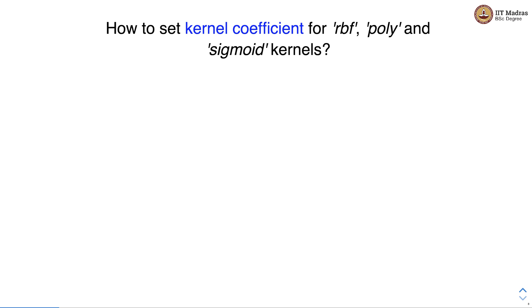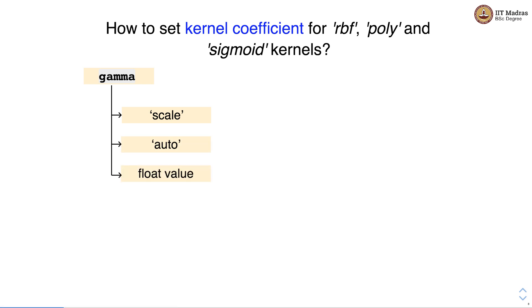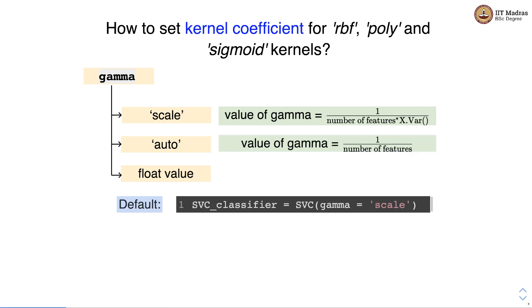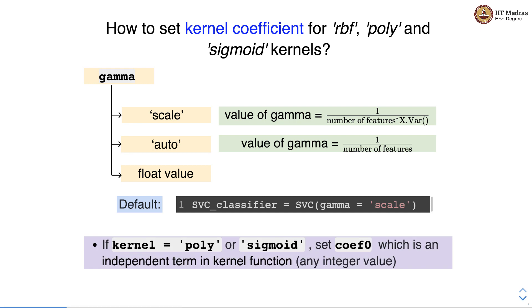To set the kernel coefficients for RBF, polynomial, and sigmoid kernels, there is a parameter gamma. Gamma defines the scale, auto value, and takes a float. When set to 'scale', the value of gamma is 1 divided by the number of features times the variance of X. The default value of gamma is 'scale'. For polynomial or sigmoid kernels, coeff0 sets an independent term in the kernel function to any integer value.